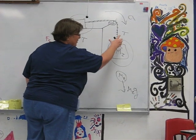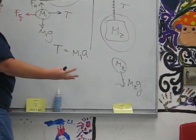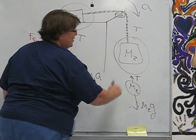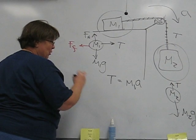And the only reason M2 doesn't accelerate at a rate of G downwards is because you've got that tensional force pulling back on it.